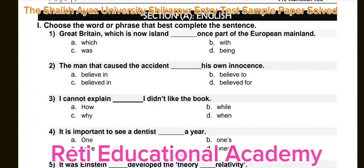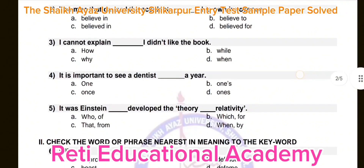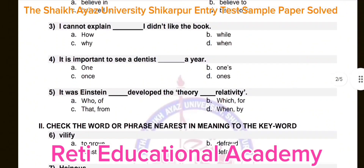Question number three: I cannot explain question dash I did not like the book. Options: A) how, B) while, C) why, D) when. The correct answer is C) why. I cannot explain why I did not like the book.